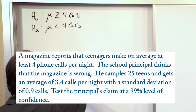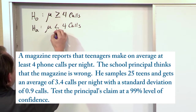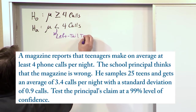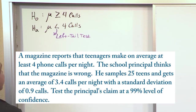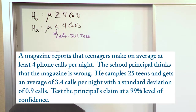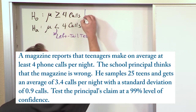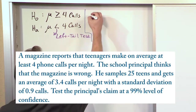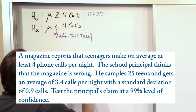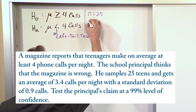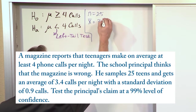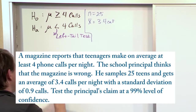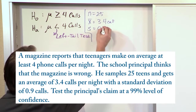Because we have a left-hand arrow in the alternate hypothesis, this is going to be a left-tail test. The problem gives us: n is 25 samples, x-bar is 3.4 calls — that's the average from the sample — and it has a sample standard deviation of 0.9 calls.